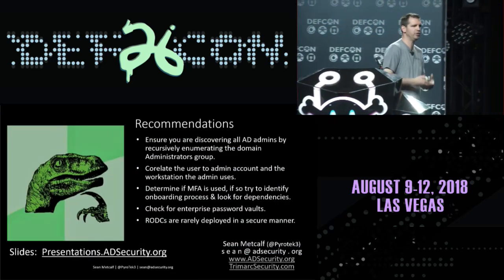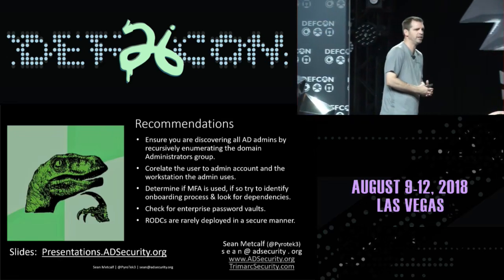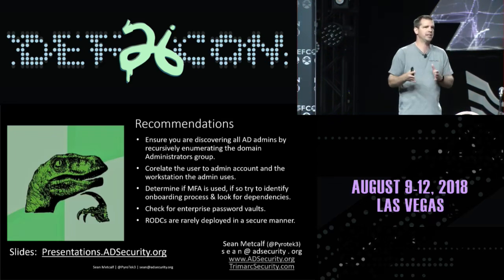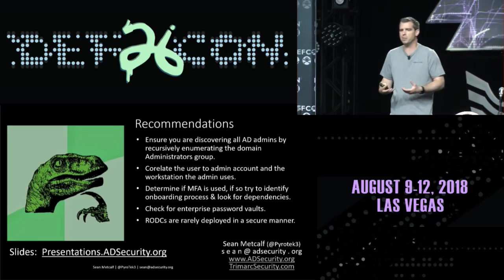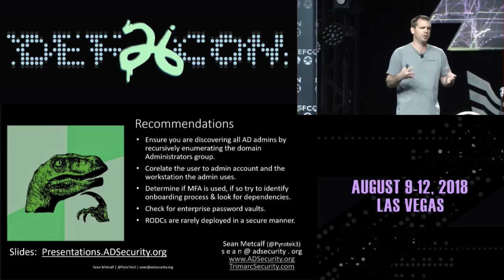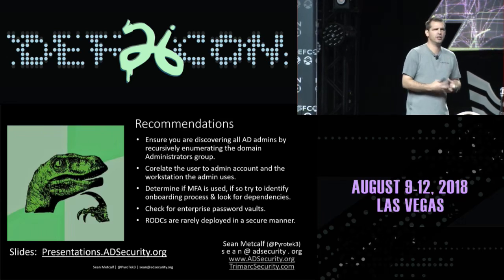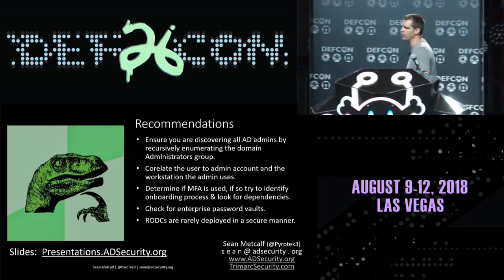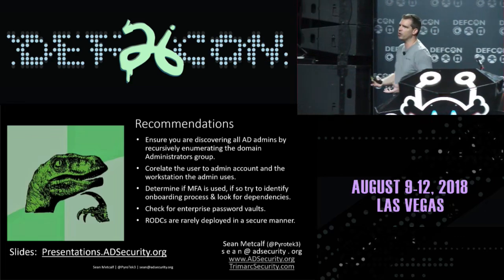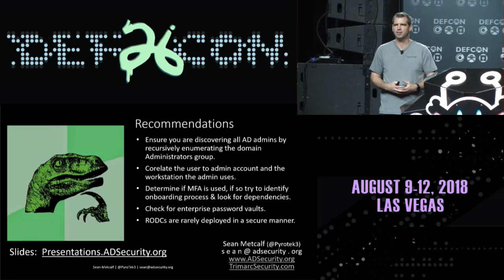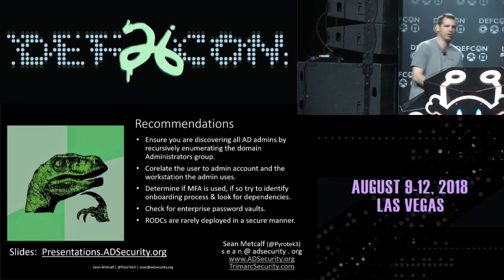Key recommendations: actively look for all AD admins you can find. Correlate user accounts to admin accounts. Look at MFA and password vaults — see how they're configured and poke at the edges. Look at RODCs if any are in the environment because they're rarely configured securely. Make sure you're enumerating group policy settings on domain controllers, user rights assignments, and checking for cross-forest administration issues. That's been my time — thank you so much. I think I have some time for questions.